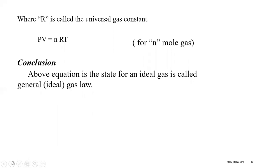If there is one mole of gas, then PV equals RT. But if there are n moles of gas — because any cylinder can contain millions of moles — we write PV equals nRT. This is the general gas equation. There will be derivation and numerical questions on this in the exam. If you have any questions, please ask in the comments. Thank you.